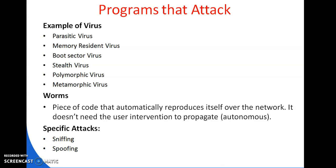There are two specific attacks: sniffing and spoofing. Sniffing is a passive attack on an ongoing conversation. An attacker need not hijack a conversation but can simply observe packets as they pass by. To prevent sniffing, the information passing needs to be protected in some way — either the data can be encoded, or the transmission link itself can be encoded.